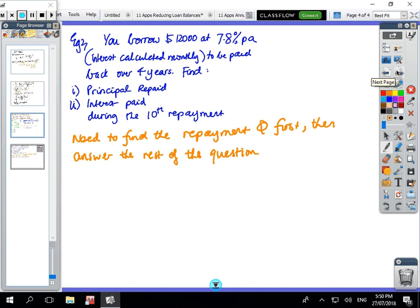This is exercise 15B which has lots of exercises like this. You borrow $12,000 at 7.8% per annum, interest calculated monthly to be paid back over four years. Find the principal repaid and the interest paid in the 10th payment. It gets complicated because you have to work out what's happening in the 10th payment but you haven't worked out any repayments yet.